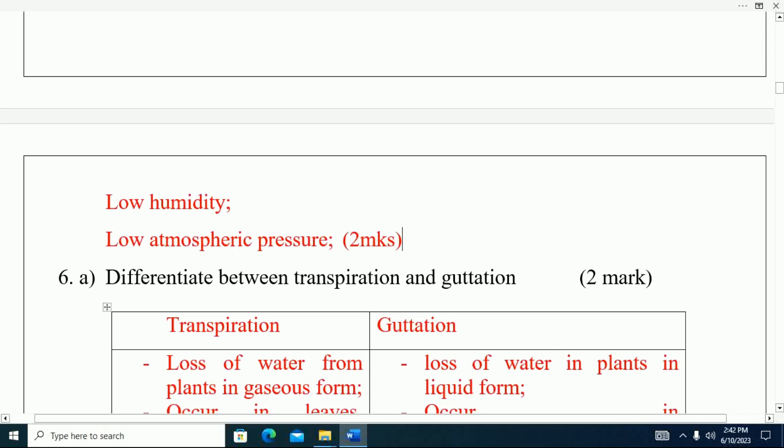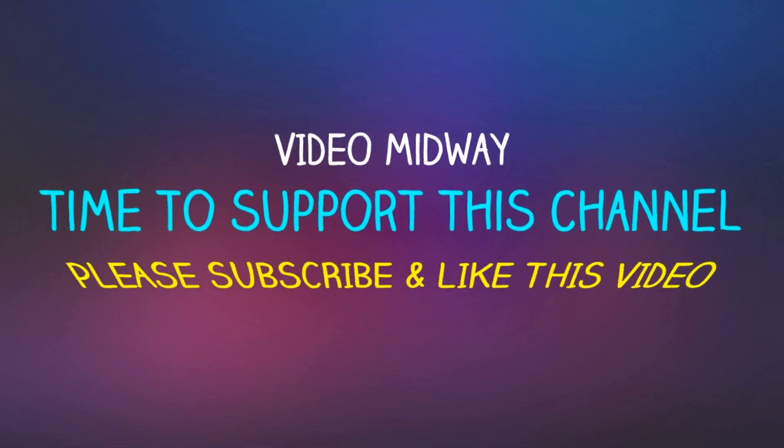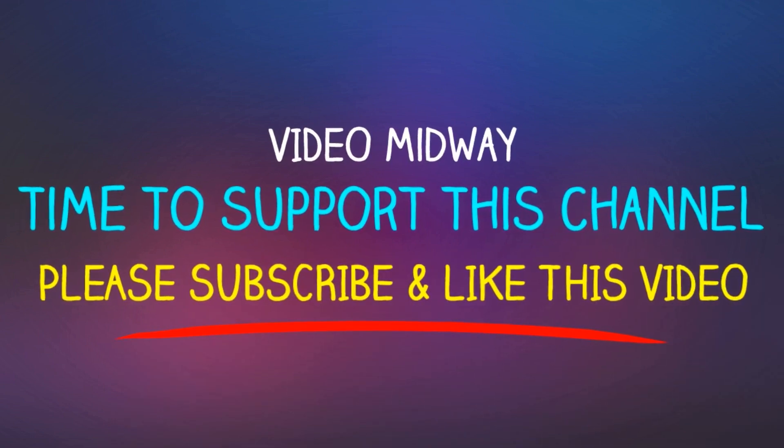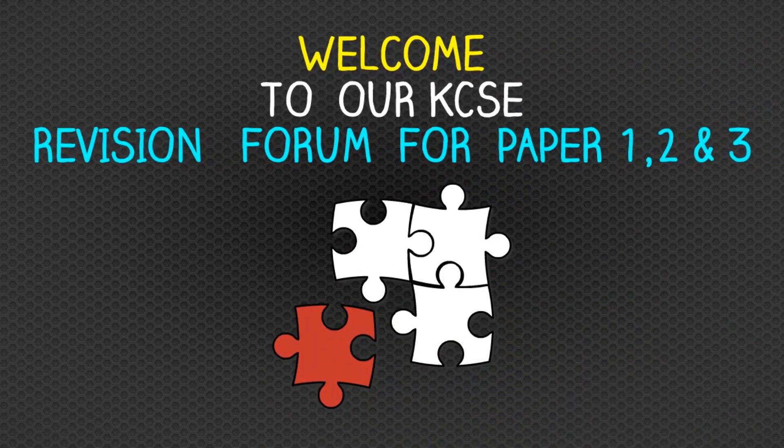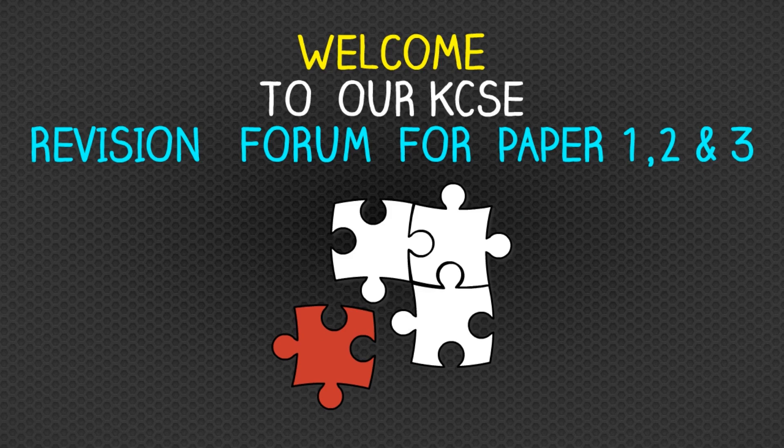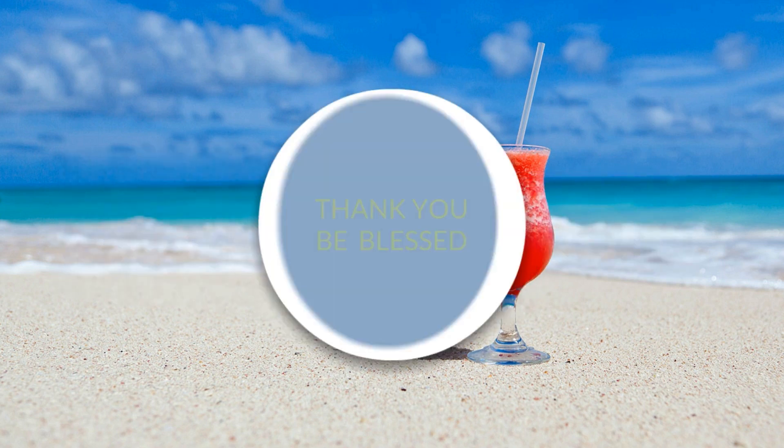Question number six: Differentiate between transpiration and guttation. We have drawn a table so we can differentiate the two. Transpiration is the process of loss of water from plant in gaseous form, while guttation is loss of water in plants in liquid form. Transpiration occurs in leaves, cuticles, and lenticels. Guttation will occur in hydathodes.